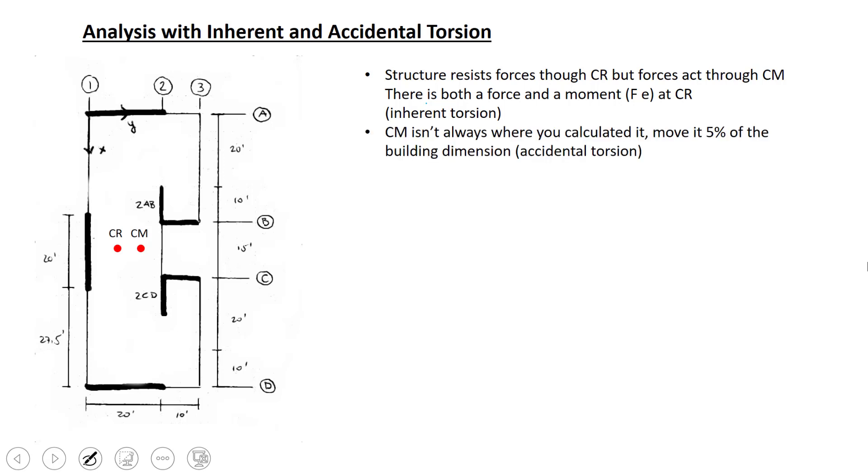Next is accidental torsion. Accidental torsion more has to do with the fact that we don't know exactly what the building will be at the end of the day because the mass is distributed a little bit differently because of construction tolerances. The center of mass could be in a different location than what we calculated. What the code asks us to do is to move this center of mass 5% of the building dimension. So we make that eccentricity that's inherent just a little bit bigger.